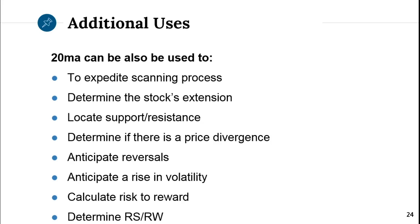The 20MA is helpful in anticipating where reversals might occur and when there might be a rise in volatility. A lot of people look at moving average crossovers — when the shorter moving average crosses over the larger — and think that's a signal to go long or short. No, it's a signal that there is going to be a rise in volatility. What tells us whether to play long or short is the trend and the pattern.